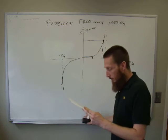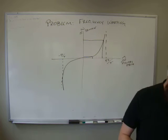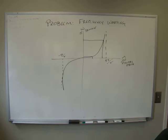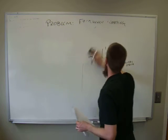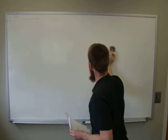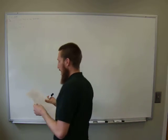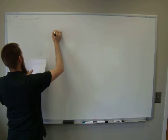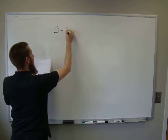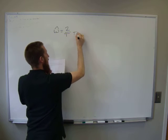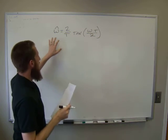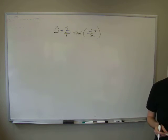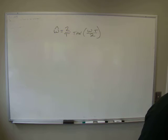What we do in order to overcome this is we pre-warp the frequencies. Specifically, omega hat is going to be equal to two divided by T times the tangent of omega T divided by two. This is the relation that creates that nonlinear graph. So what we want to do is undo this before it ever occurs.